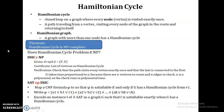Let's start with the NP proof. For the Hamiltonian cycle problem, the input is a graph with vertices V and edges E, and the output is a list of vertices visiting all nodes such that the last vertex is the same as the first vertex. The verification step is to check whether the path visits every vertex exactly once, except the first and the last. This verification will take time proportional to the number of vertices, so we can say this verification algorithm runs in polynomial time.